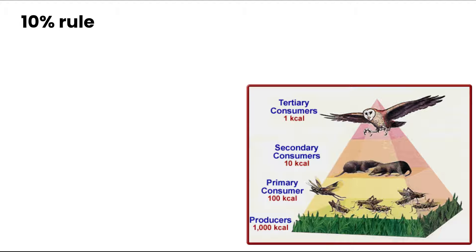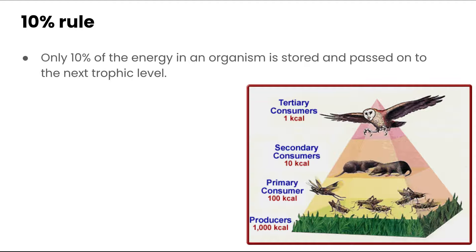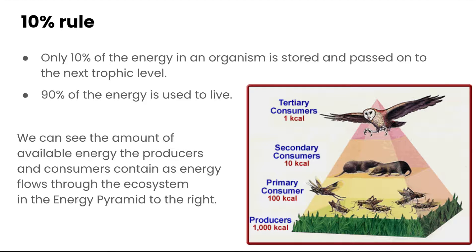Energy is lost as we go up a food chain or energy pyramid. There's something called the 10% rule: only 10% of the energy in an organism is stored and passed on to the next trophic level. If producers have 1,000 kilocalories, primary consumers receive only 100, secondary consumers only 10, and tertiary consumers only 1. So 90% of the energy at each level is used to live.